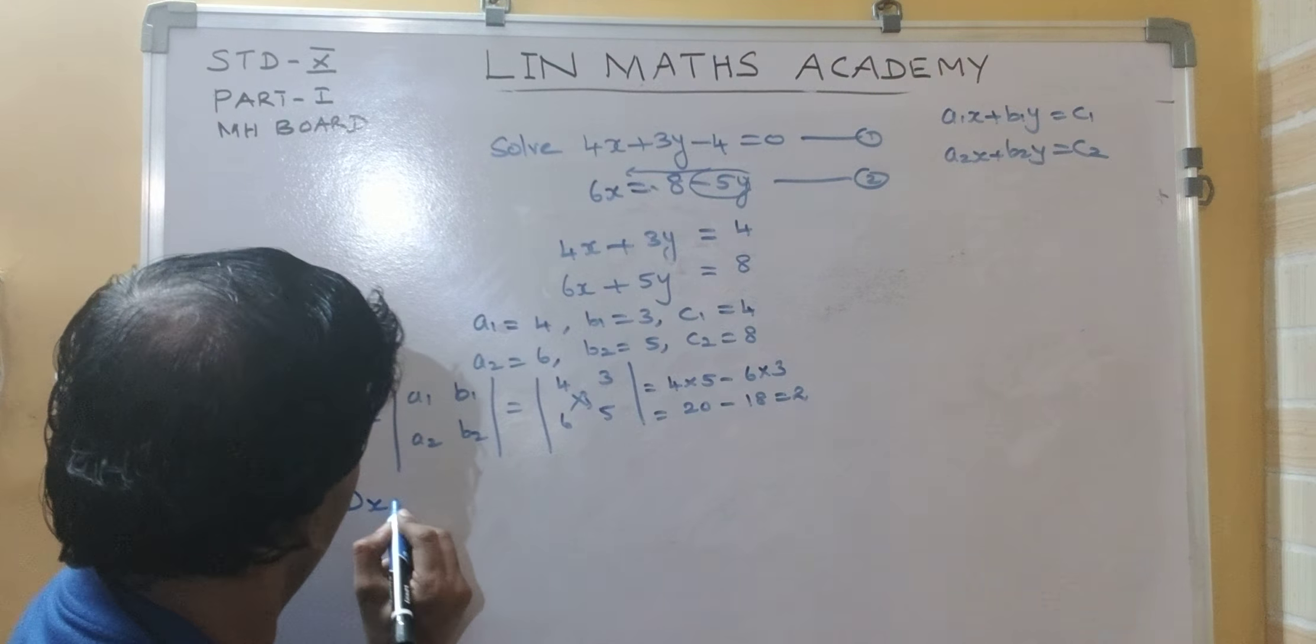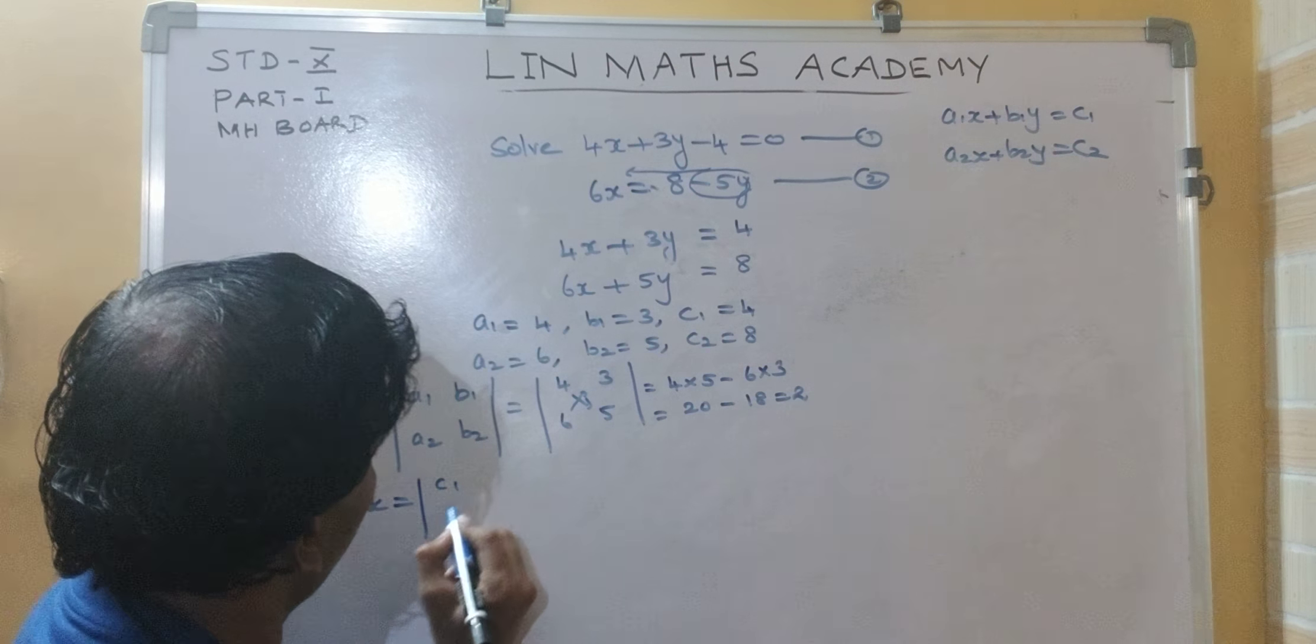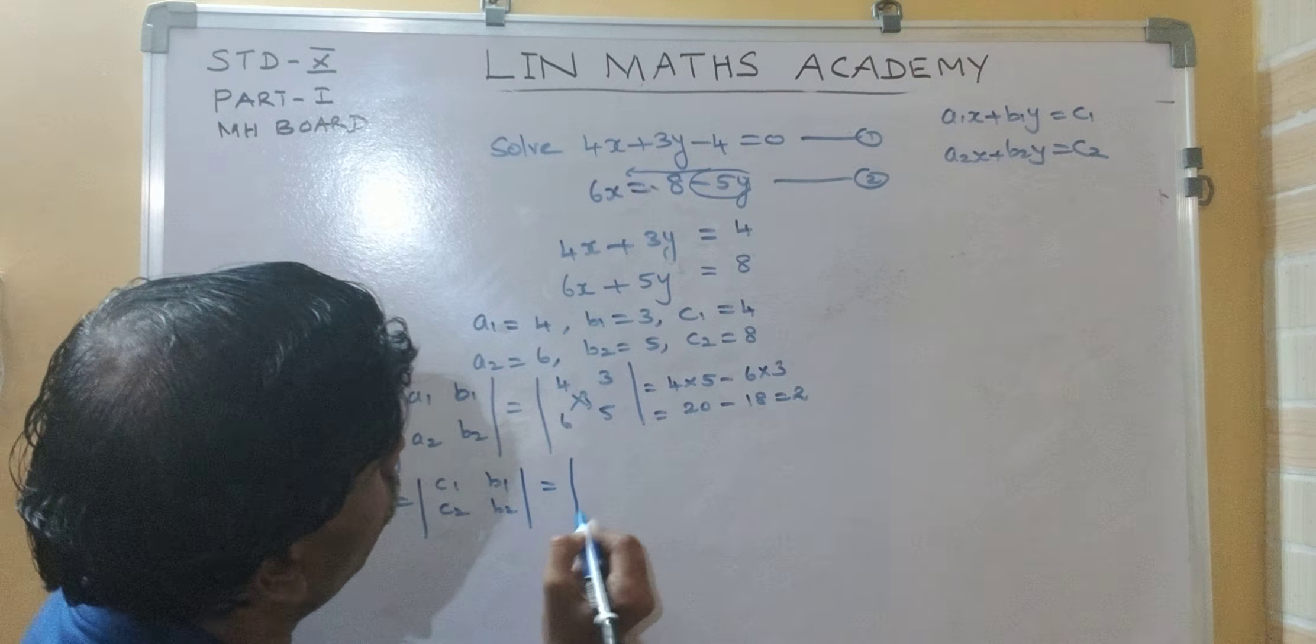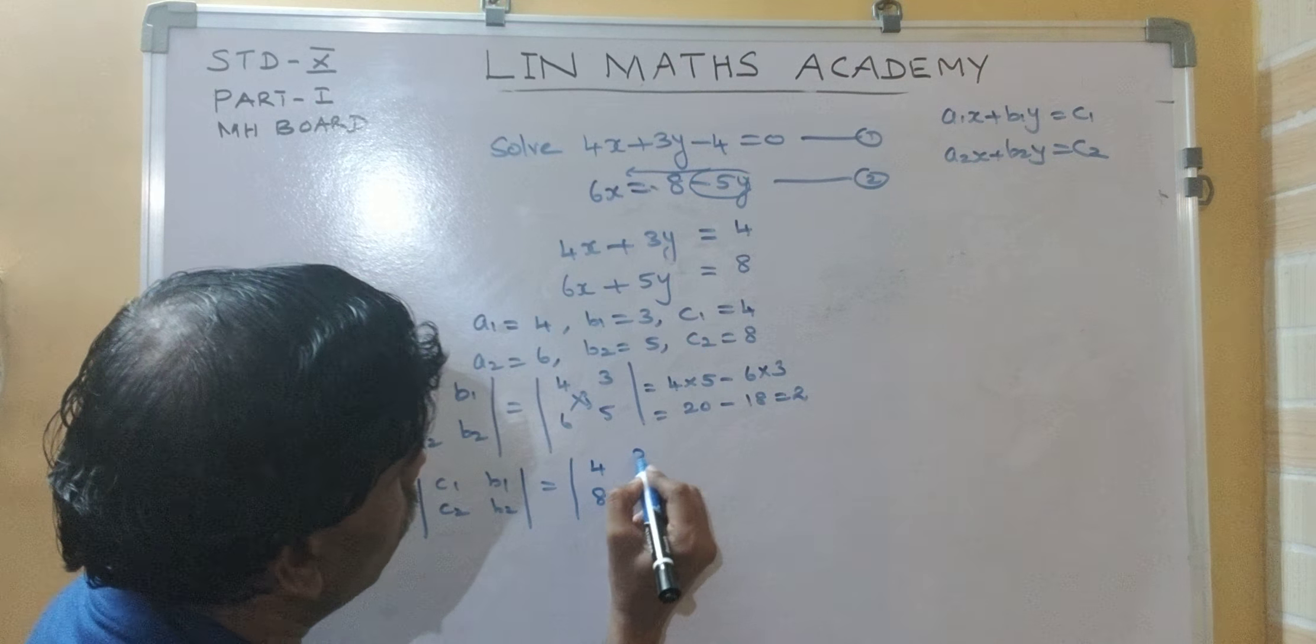Now, again dx, c1, c2, b1, b2. What is c1, c2? 4, 8, 3, 5.